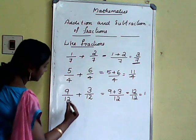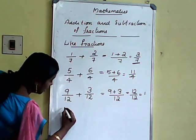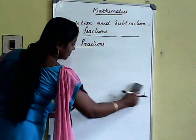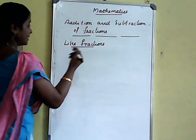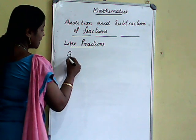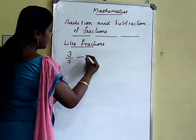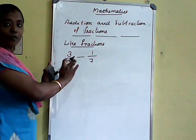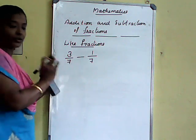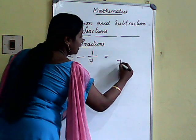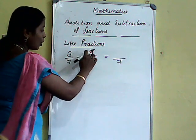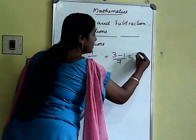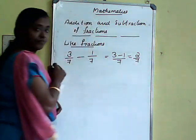How to subtract? That means the same procedure. Subtraction: 3 by 7 minus 1 by 7. The same procedure, but the operation is subtraction. We keep the denominator same and do the operation only in the numerator: 3 minus 1. What will we get? 2 by 7.